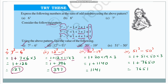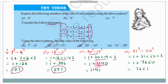Next, find the value of 20³−19³. Applying the formula: 1 + 20×19×3 = 1 + 1140 = 1141. So the answer is 1141.